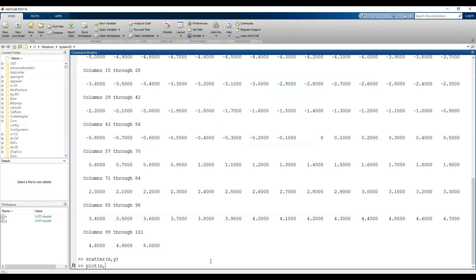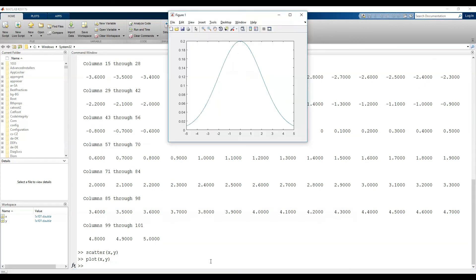We can also draw the continuous function with plot function. This function connects the points to each other and you can see a continuous normal distribution.